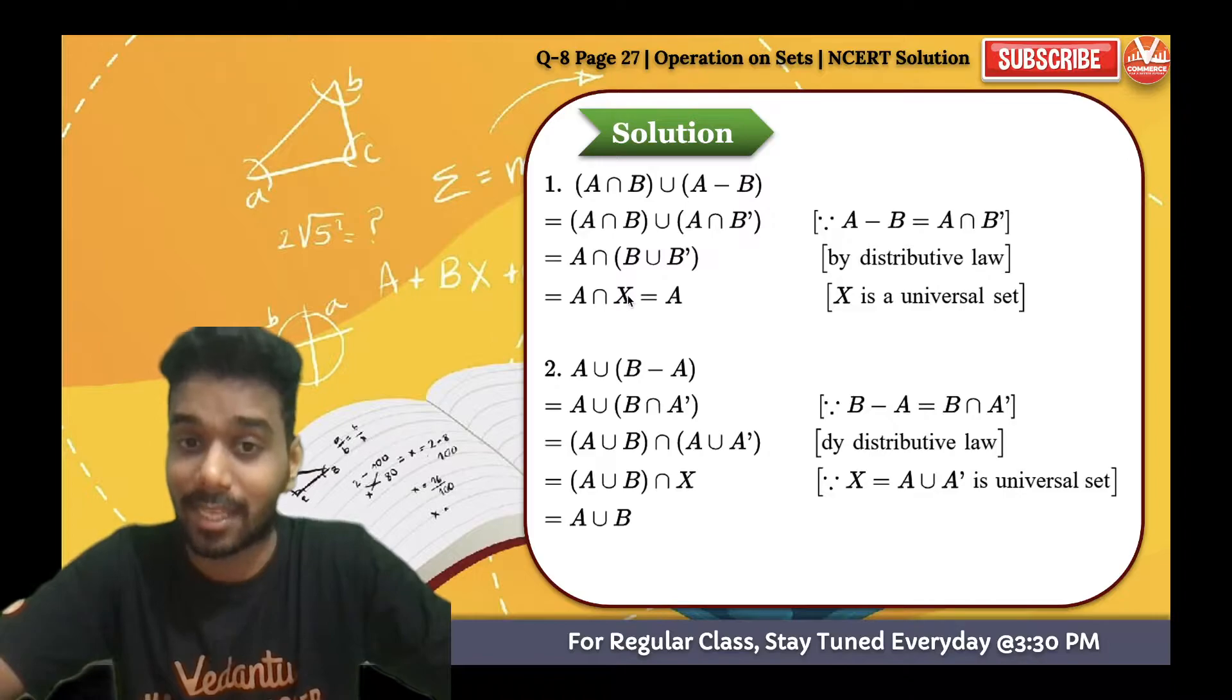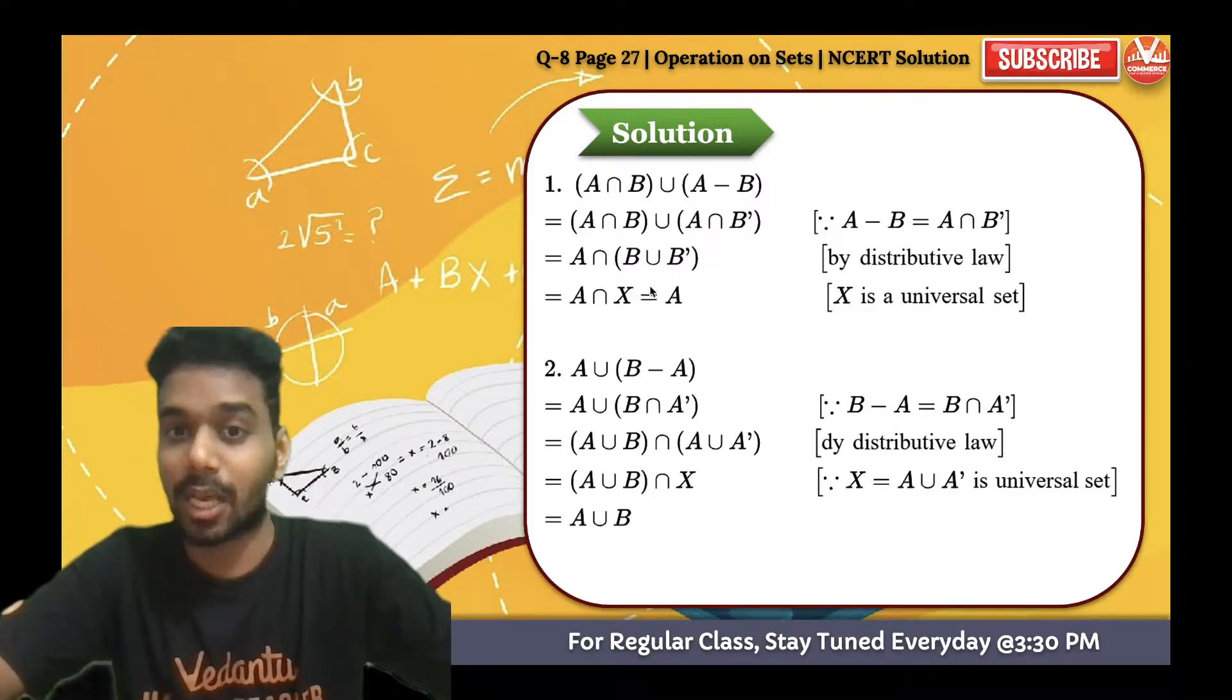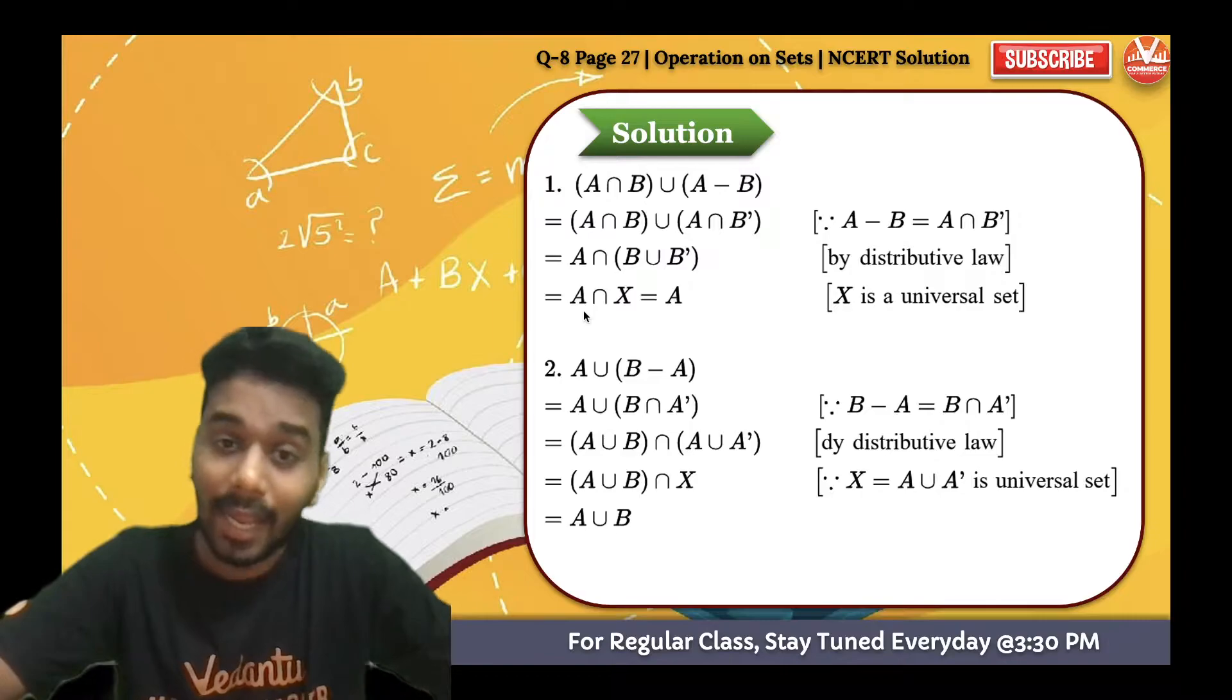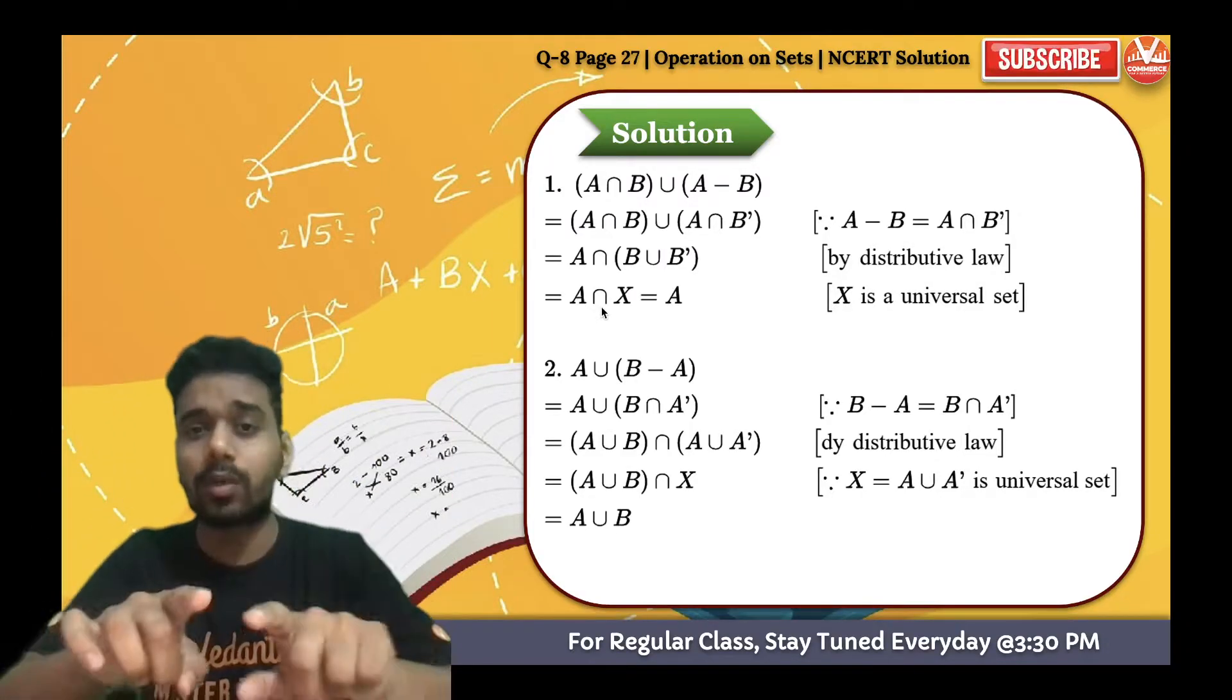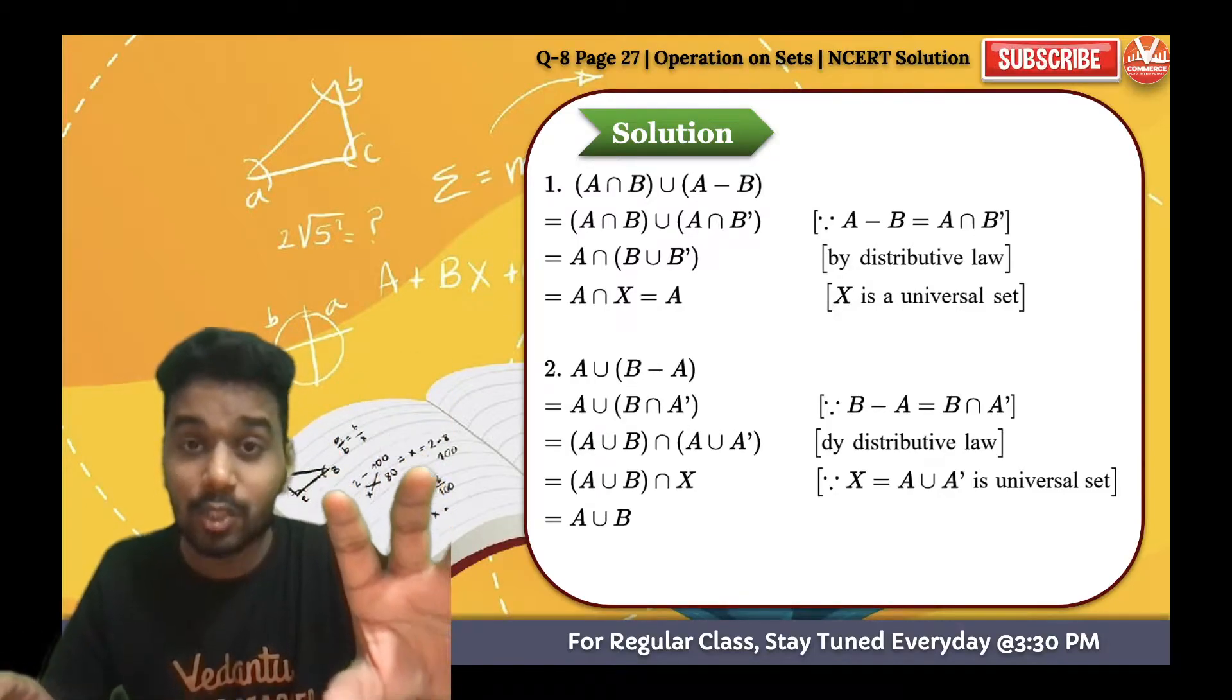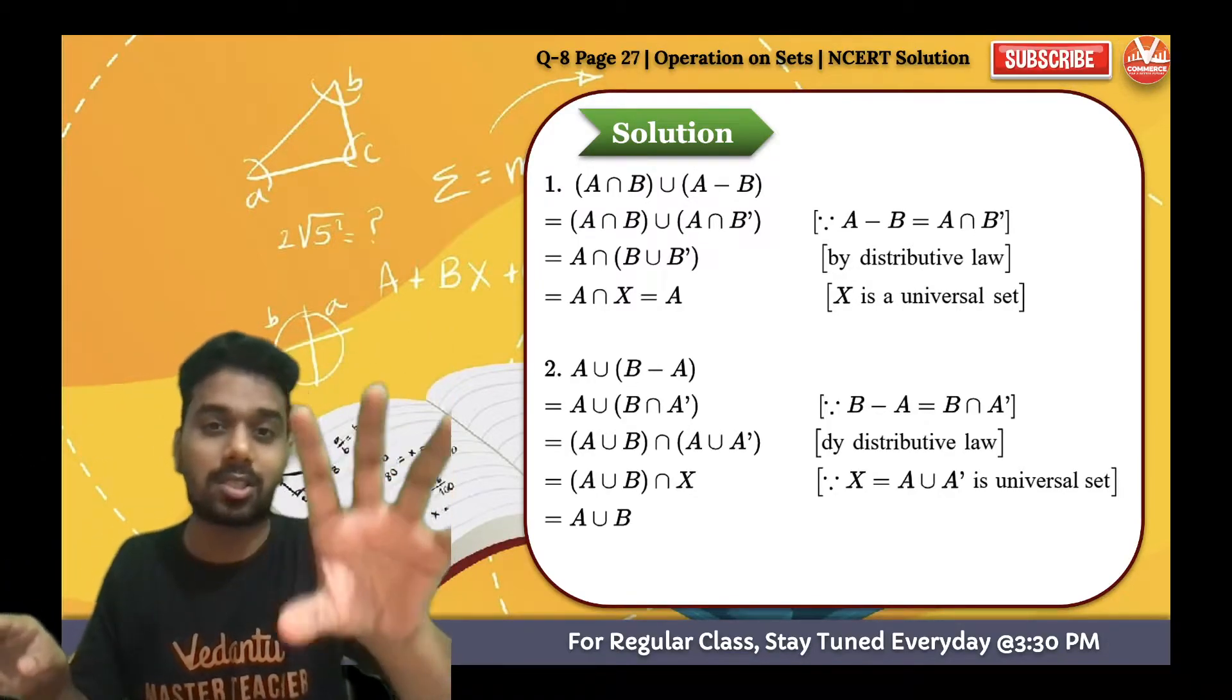B union B dash, or A union A dash, for any such kind of combination, the answer is always universal set X. So B union B dash is the universal set. A intersection with the universal set - in the whole universal set we are having just a small circle A, so intersection with the whole box with the circle is the circle itself. So answer is A.